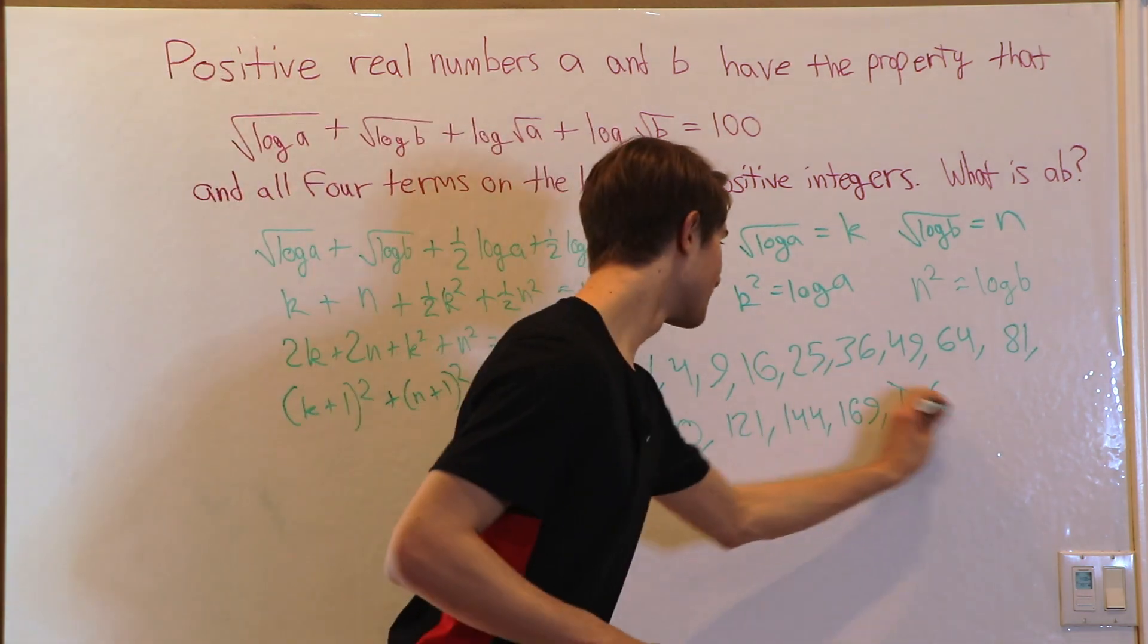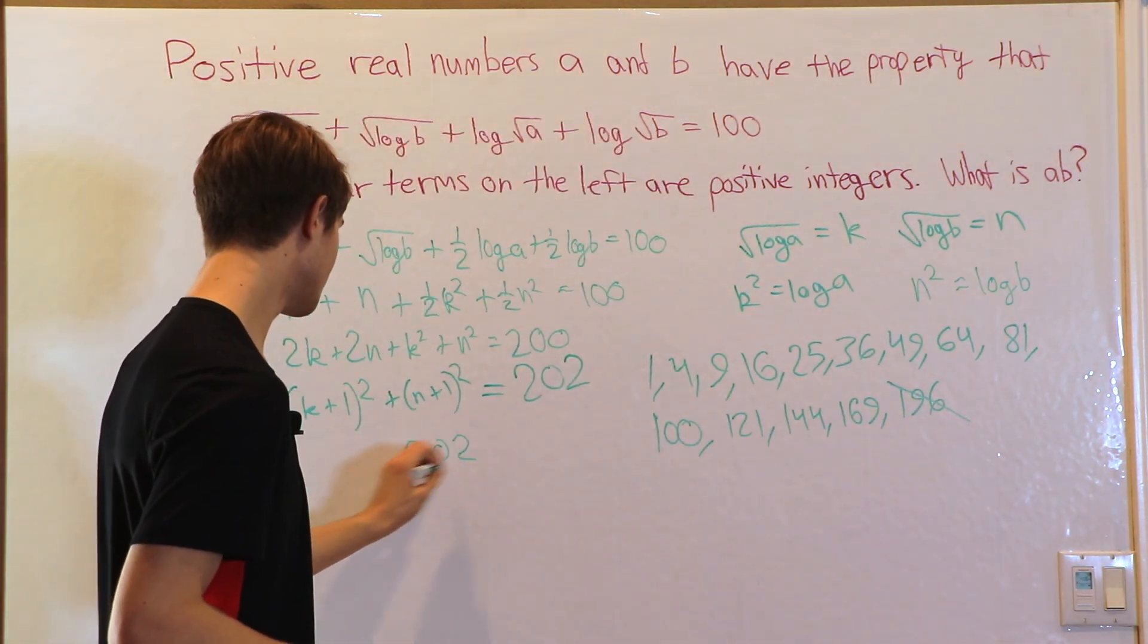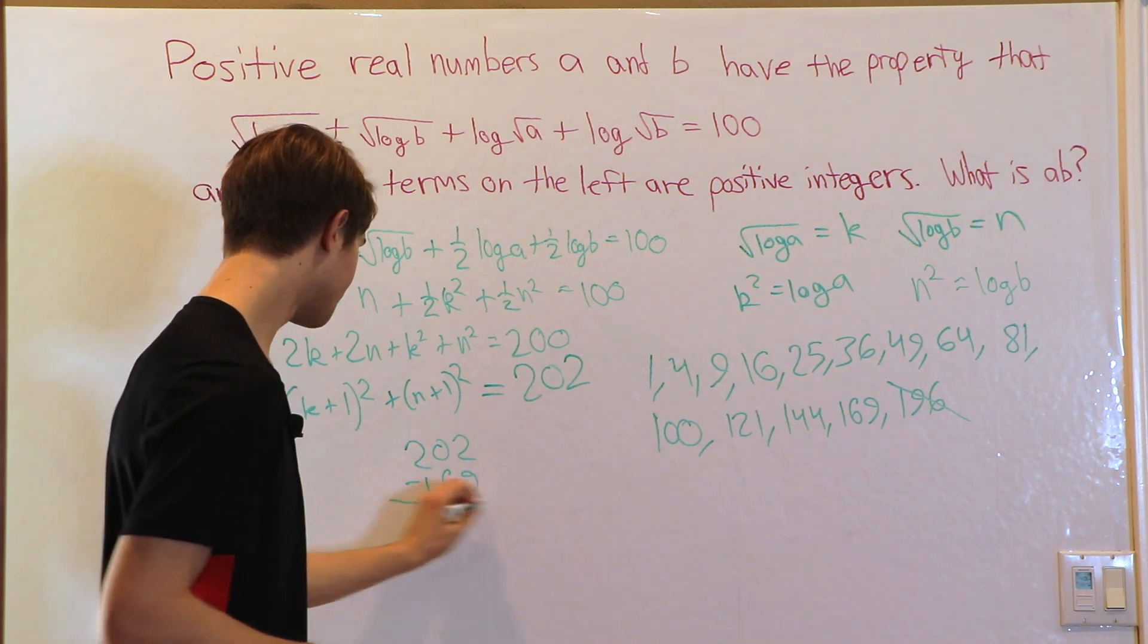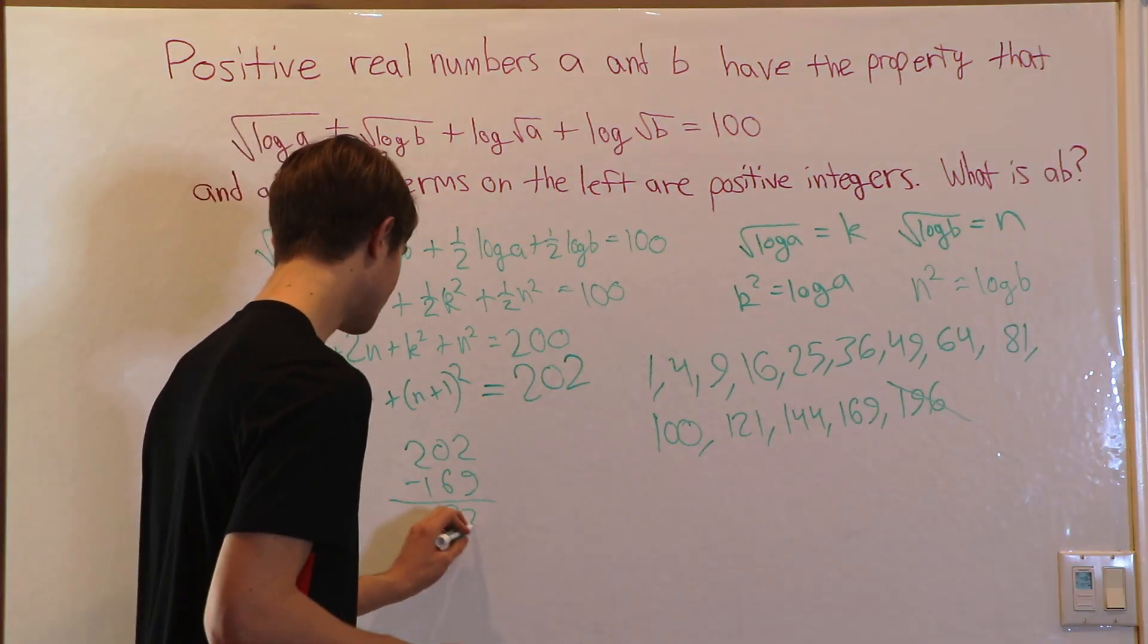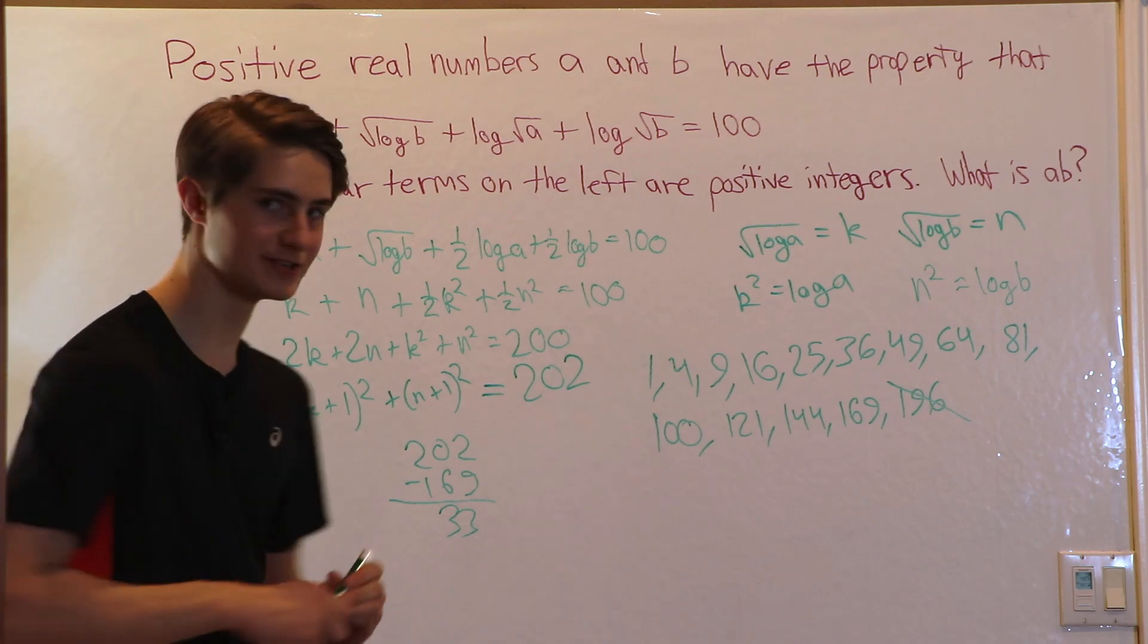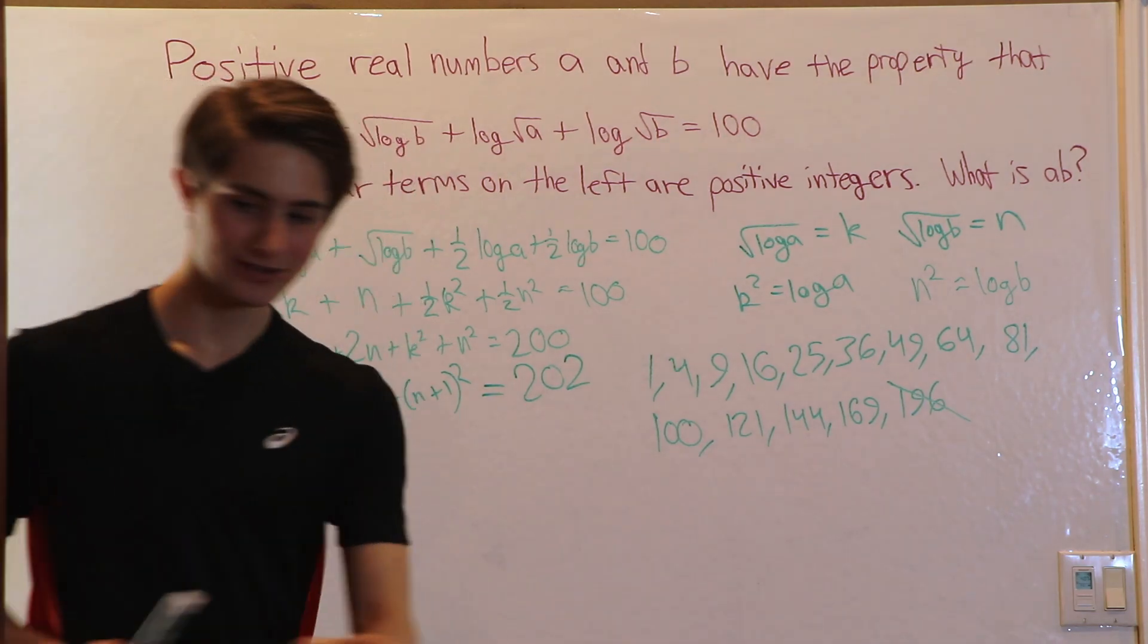Let's keep going. 169. If we do 202 minus 169, that's going to be 33. 33 is not a perfect square. That's not our answer either.